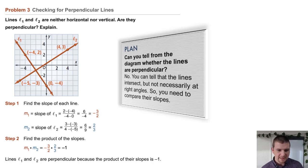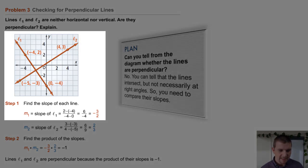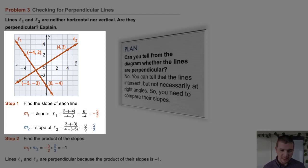Step 1 is to find the slope of each line. We find that simply using the slope formula: Y2 minus Y1 over X2 minus X1. The slope of line 1 is negative 3 halves, the slope of line 2 is 2 thirds. So we know the slopes.